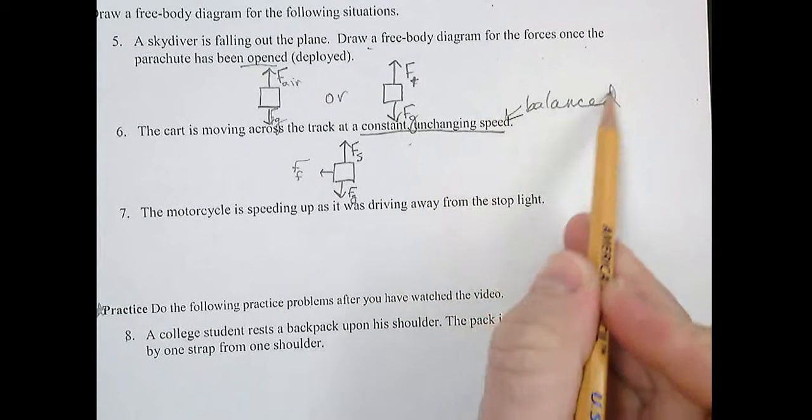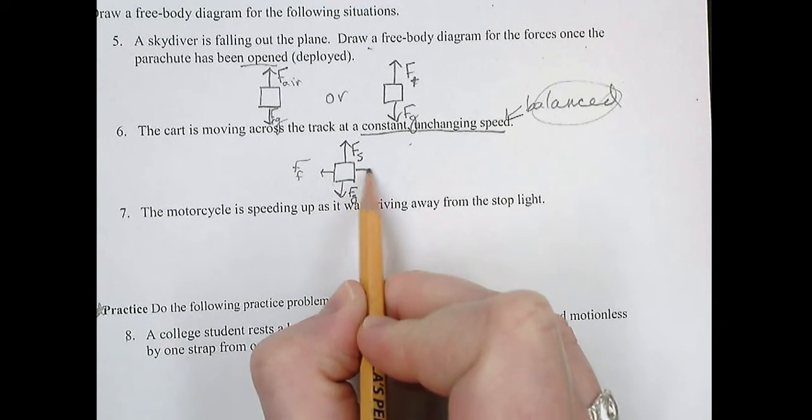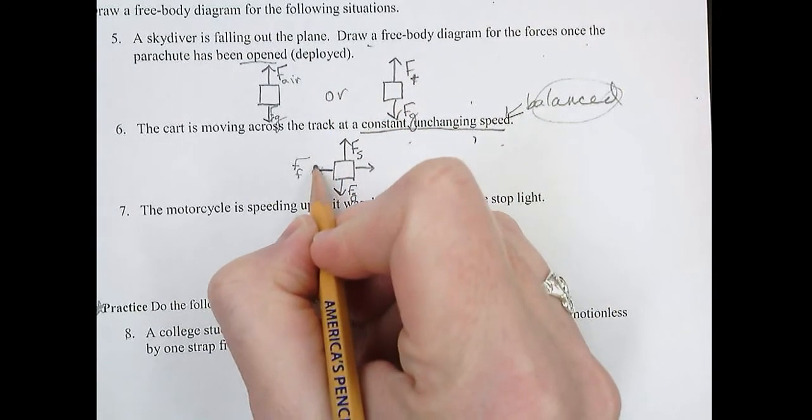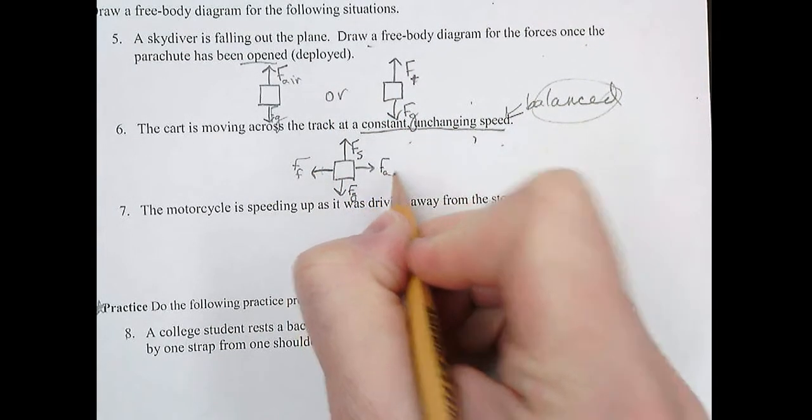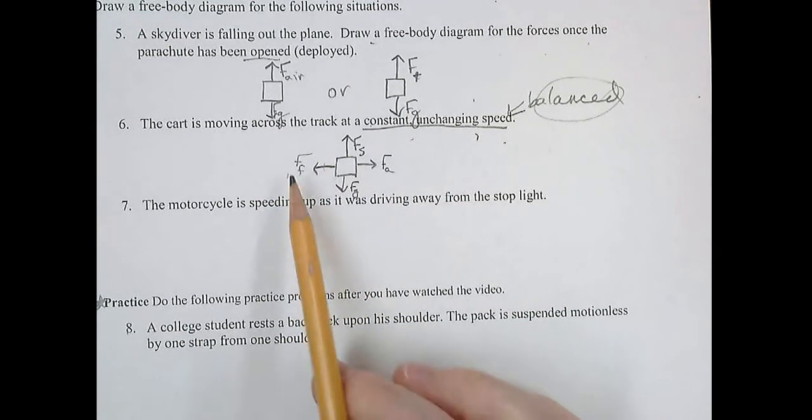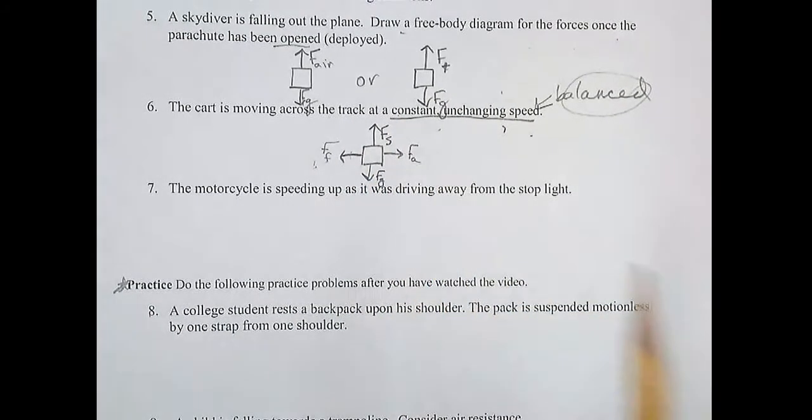Now going back to our balanced forces. Because the forces are balanced, there has to be, oh sorry, those should be the same size. I'm really bad at drawing arrows of the same size. There has to be some applied force. So even though we don't know that there is someone pushing or pulling this cart, we do know because there is friction that there has to be an applied force. So you've got to double check, do I have balanced forces?